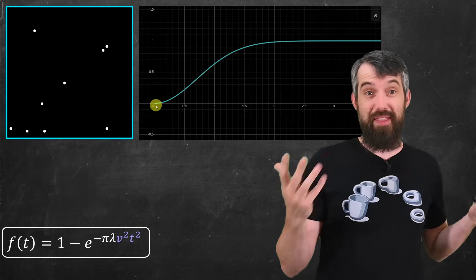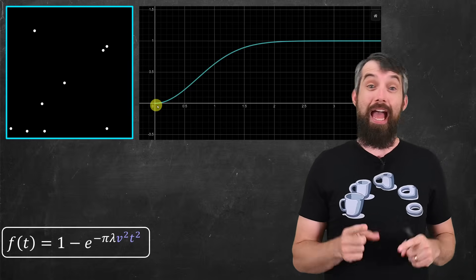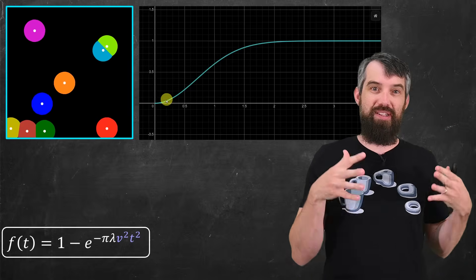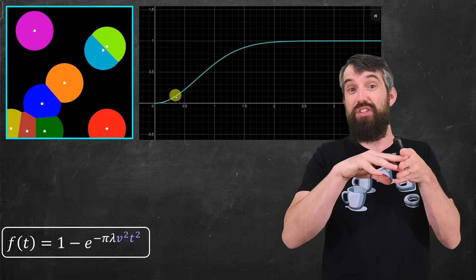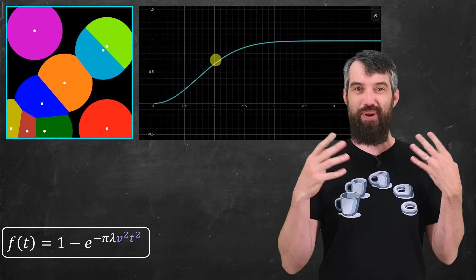You can plot this curve, and you get this really nice graph that hopefully makes sense with what we're talking about. At the beginning, there's very slow growth, because the crystals are really small, there's not a lot of new area to crystallize.